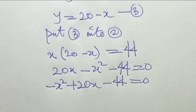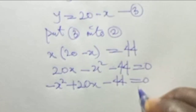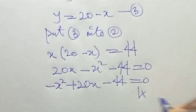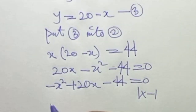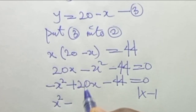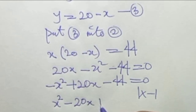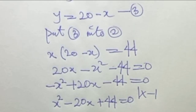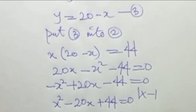Since the coefficient of the highest power of s is negative, we multiply through the equation by minus 1. So minus 1 times minus s squared gives s squared, and minus 1 times 20s gives minus 20s, giving us s squared minus 20s plus 44 equals 0.